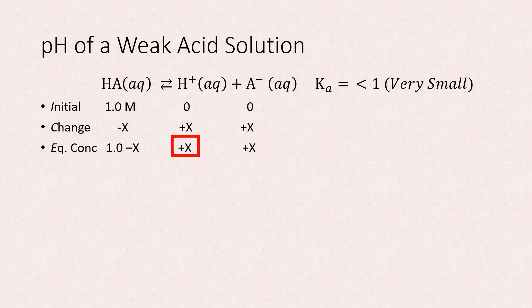We can insert these equilibrium terms into the equilibrium expression, Ka. Ka is x times x in the numerator, or x squared, over 1.0 minus x.